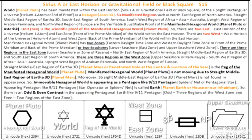Two zones of the manifested hexagonal world resemble two seashores. Lower seashore of the manifested hexagonal world is called East Zone, and the upper seashore of the manifested hexagonal world is called West Zone. Region of the tallest tree of Newton or the appointed Kaaba is the manifested sign of the upper seashore or West Zone. Region of the Artha 3D at the center and junction of the seas is the manifested sign of the lower seashore or East Zone.